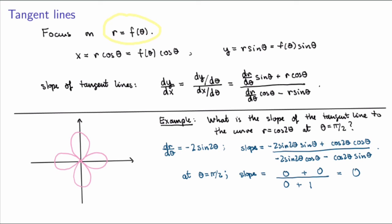Let's verify this makes sense. The point on the graph with polar coordinates θ = π/2 has r = cos(2·π/2) = cos(π) = −1, so the polar coordinates are (−1, π/2). A point with r = −1 and θ = π/2 is on the other side of the origin from (1, π/2), and indeed this point has a horizontal tangent line, just as we calculated.